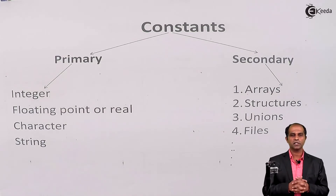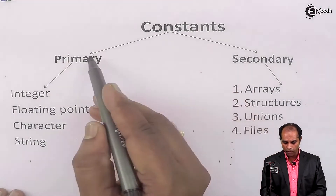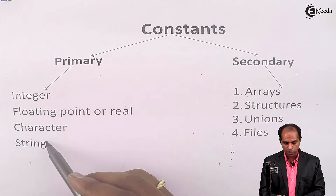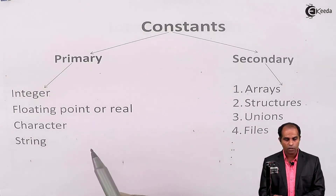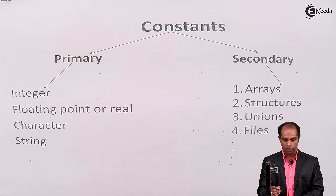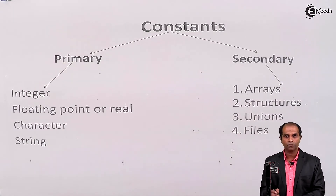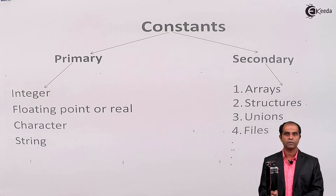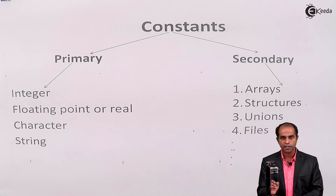What are the types of constants in C language? Basically we have two types: primary constants and secondary constants. Primary constants are the ones used in basic programs — integer constant, floating point or real constant, character constant, and string constants. Secondary constants are high-end or later contents of C language, such as arrays, structures, unions, files, and so on. In the initial stage, let's avoid discussing secondary constants.